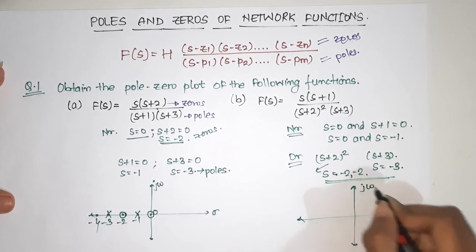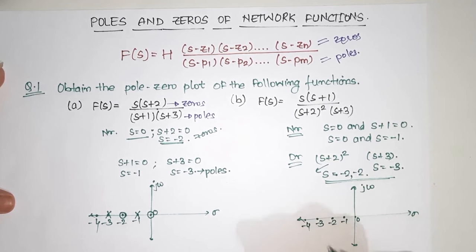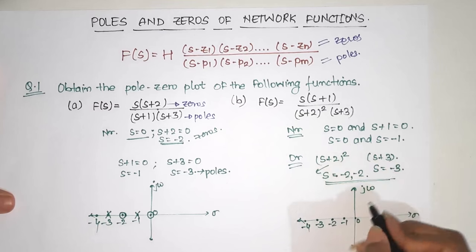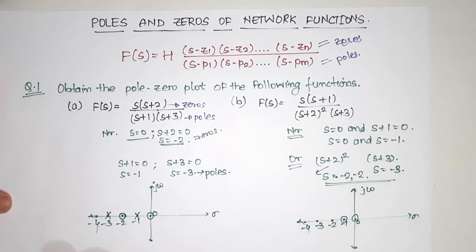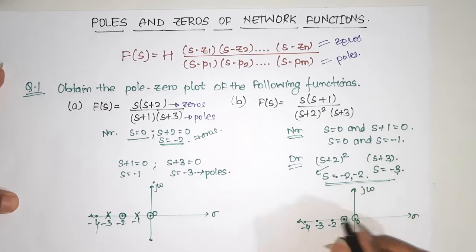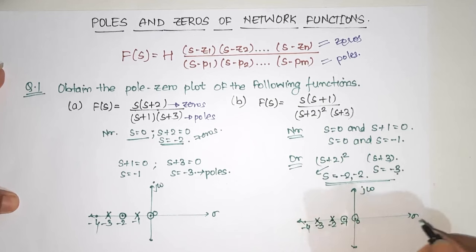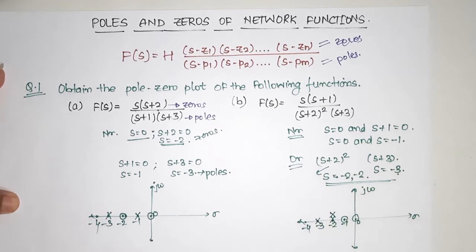So one pole is at s = -3, and from (s+2)² we get s = -2 twice, because it is squared. On the sigma-jω plot, zeros at 0 and -1 are marked with circles. Poles are at -2, -2 (double), and -3, so we double-cross -2 to indicate the repeated pole. This is how we solve the question.